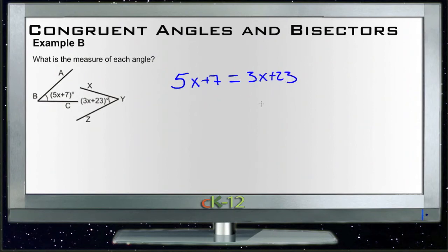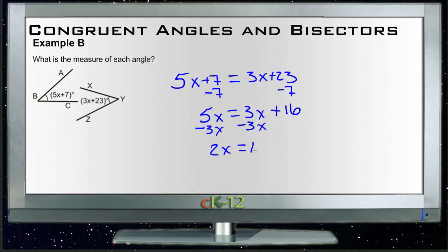If these angles are equal, then we just solve for x by subtracting 7 from both sides. We get 5x equals 3x plus 16. Then we subtract 3x from both sides, and we get 2x equals 16.